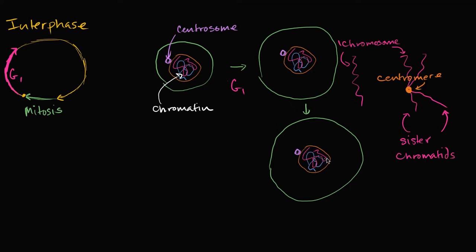So we had this magenta chromosome, and now it replicates — it's still one chromosome, although it has twice the genetic material. You have these two sister chromatids connected at the centromere. And that's also going to happen for the blue chromosome; all this genetic material is going to replicate and you're going to have two copies of it.